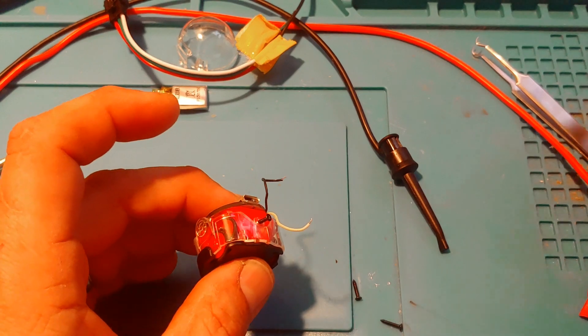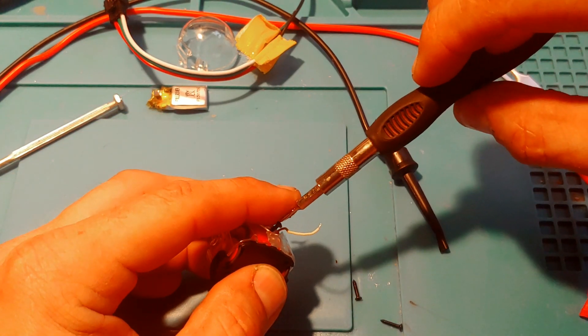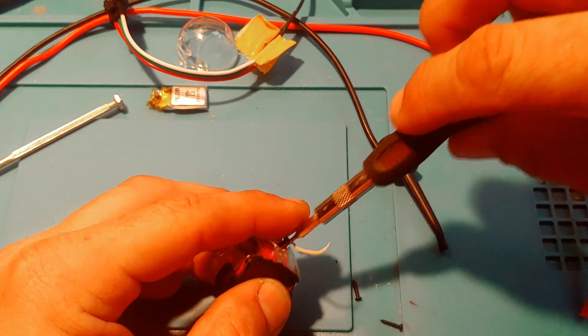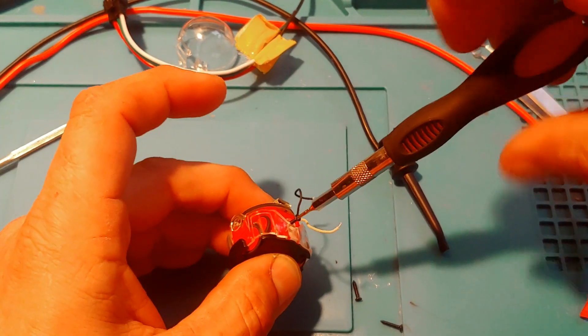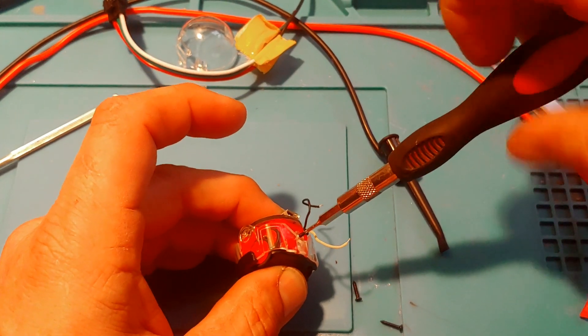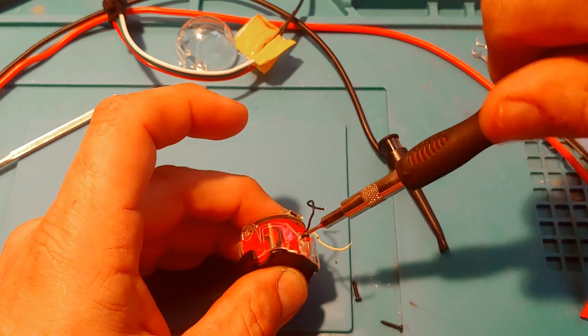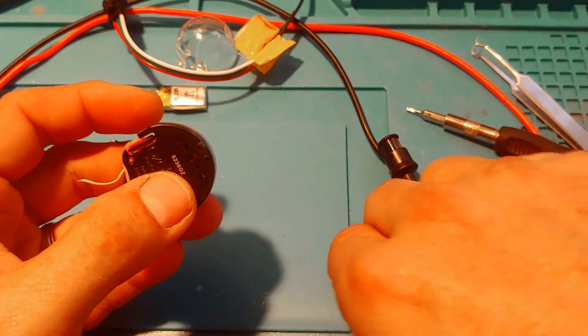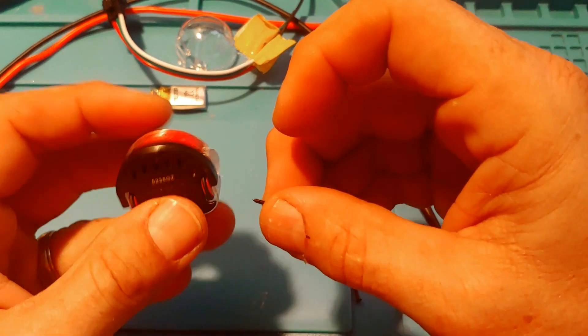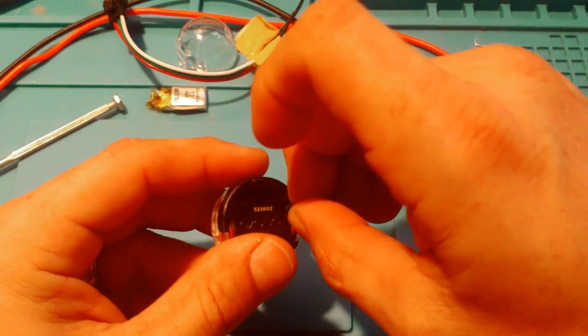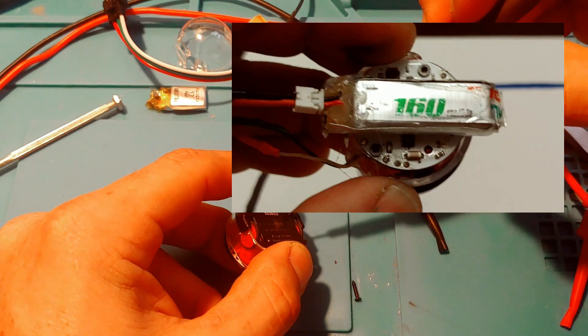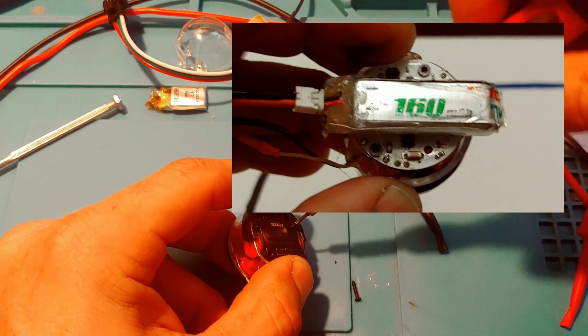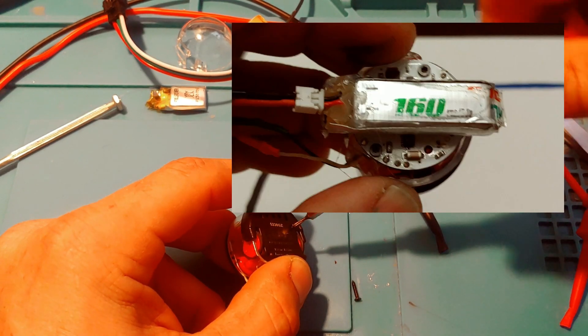So once you get it all together, you're going to need to come up with some kind of strategy for your power, your battery. I use, like I said, a small, I think this is 160 milliamp hour battery from an RC helicopter that I just happen to have laying around, and it's light enough. I think one of the main things is that it's got to be a really light battery and the weight should be distributed across the entire thing.